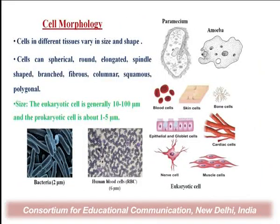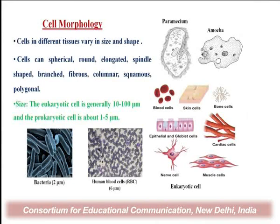Now, coming to cellular morphology — there are various shapes and sizes of cells, identified using the microscope. Cells differ in shape and size; they can be spherical, round, elongated, spindle-shaped, and branched. The shape of a cell determines its function. The size of the cell varies from prokaryotic to eukaryotic: eukaryotic cells are generally 10 to 100 micrometers, while prokaryotic cells are 1 to 5 micrometers.